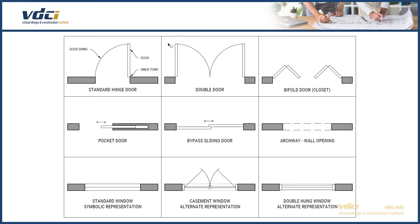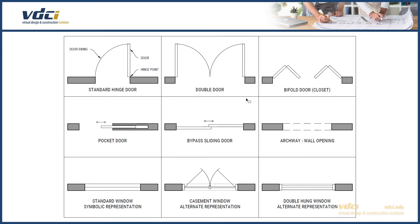Then we have a double door. With a double door, one is typically fixed or usually closed, and the other is the dominant door. Just like with the single door, we have our hinge points. What you might see in some drawings is one door dashed in this area, which would mean that this is the door that's typically closed.